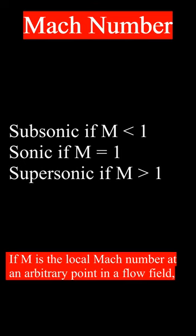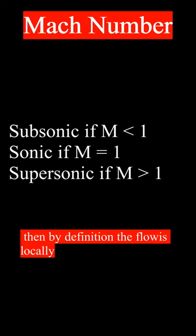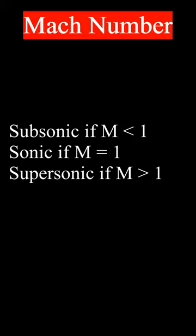If M is the local Mach number at an arbitrary point in a flow field, then by definition the flow is locally subsonic if M < 1, sonic if M equals 1, and supersonic if M > 1.